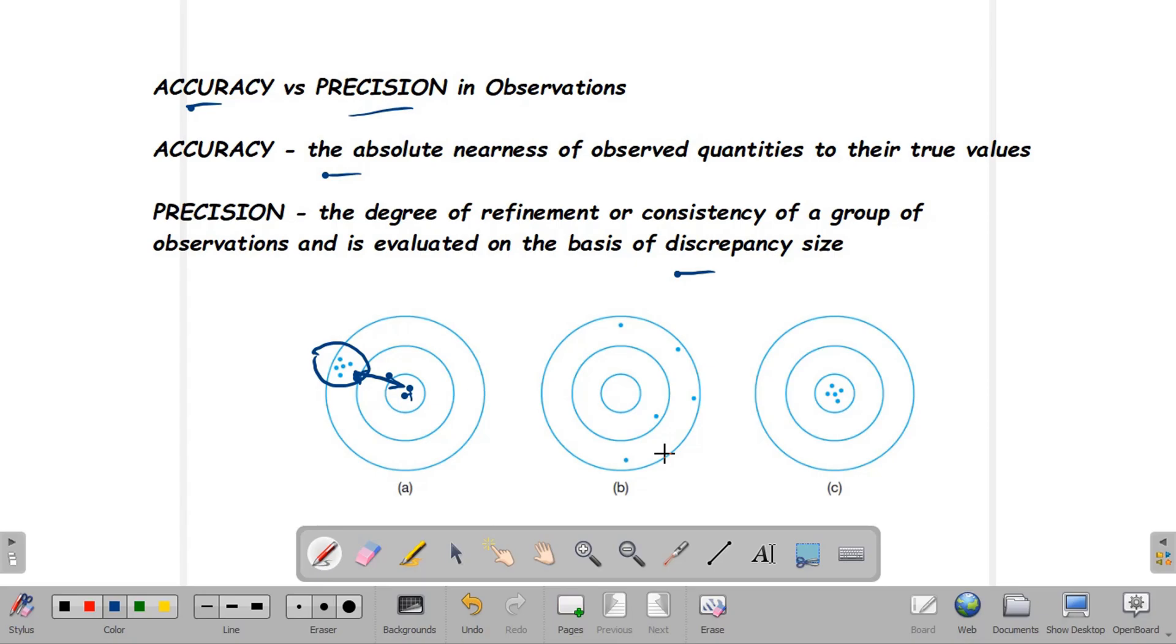For the second figure, these points or measurements are neither precise nor accurate because they have bigger discrepancies from each other. They're not grouped like this one and they're also far from the true value.